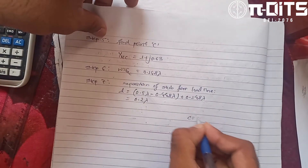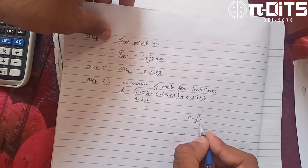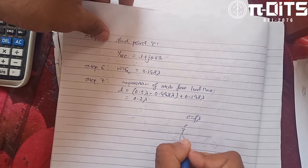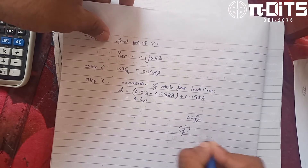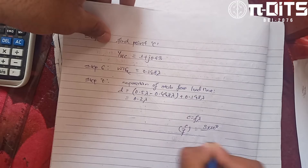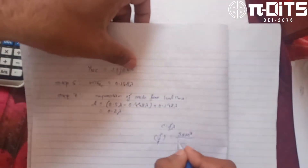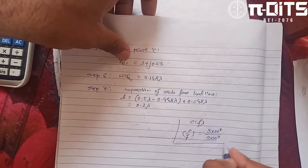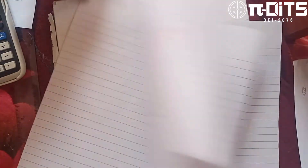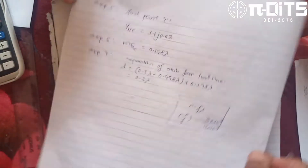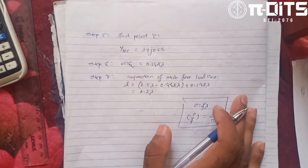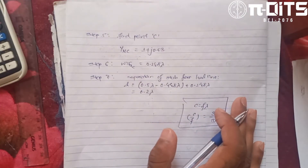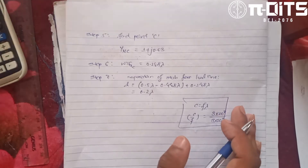Lambda c equals to speed of light divided by frequency: c is equal to 3 times 10 to the power 8, and frequency equals 3 gigahertz, which is 3 times 10 to the power 9. So the distance capital D equals lambda times the length.